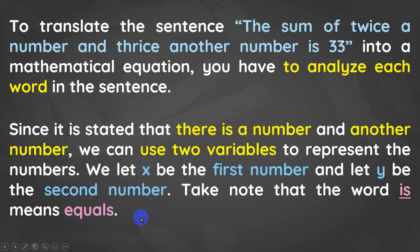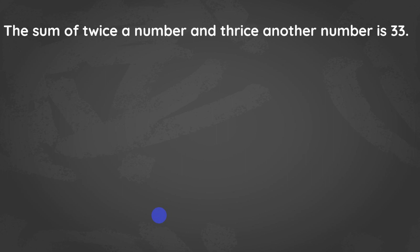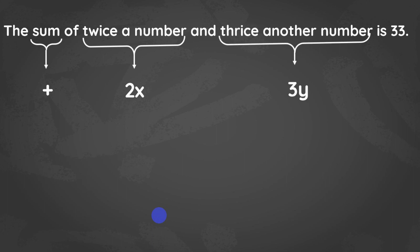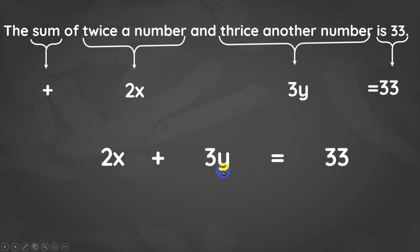Take note that the word 'is' means equal. We're going to represent the problem using two variables x and y. Now, let us translate: the word 'sum' means addition; 'twice a number' means multiply the first number by 2; 'thrice another' means multiply the second number by 3. The first number is x, the second number is y, and 33 means equal to 33. So we're going to have 2x plus 3y equals 33.